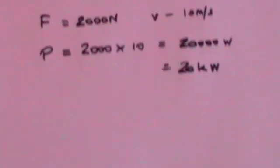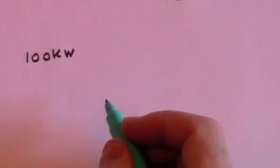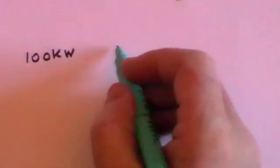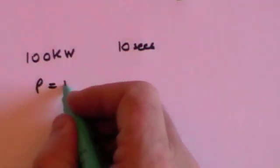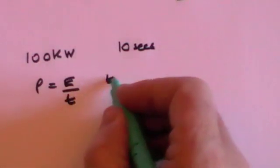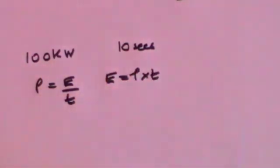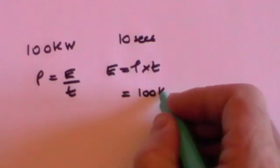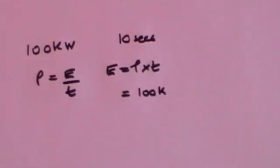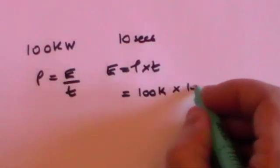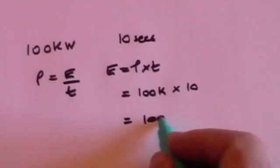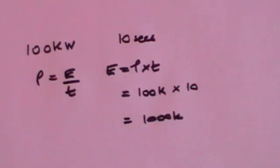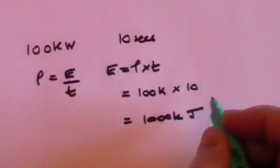A couple more questions. We might be told that the engine power is 100 kilowatts, and we might be asked how much energy is used in 10 seconds. Well, power is energy over time, so energy is power times time. In this case, that's going to be the power, which was 100 kilowatts, times the time, which is 10 seconds. So that's going to be 1,000 kilojoules.